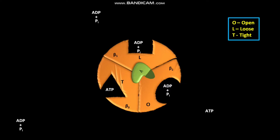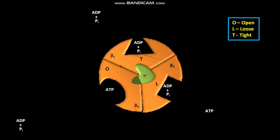Now the H+ ion, or proton flux, through the F0 portion of the ATP synthase causes another 120 degree rotation of the gamma subunit. This 120 degree rotation of the gamma subunit pushes differently against the beta1, beta2, and beta3 subunits. As a result of this push, the beta1 subunit undergoes a conformational change from L to T, or loose to tight. Due to this conformational change, the binding affinity of beta1 subunit for its previously bound ADP and PI increases, so the beta1 subunit binds more tightly to the previously bound ADP and PI.